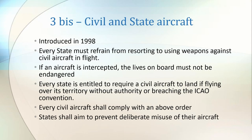In 1998, Article 3 was extended. This section was called 3BIS. It outlines that every state must refrain from resorting to using weapons against civil aircraft in flight, and that if an aircraft is intercepted, the lives on board and the safety of the aircraft must not be endangered. However, in order to protect states' rights, they've added a clause that explicitly entitles states to require any civil aircraft to land if it is flying over its territory without authority or is operating in some manner that is inconsistent with the ICAO Convention. Additionally, it explicitly states that all civil aircraft have to comply with these requests, and that any violation of this shall be punished by severe penalties by the nation responsible for the aircraft.